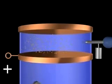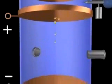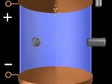He allowed a fine spray of oil to settle through a hole into a chamber where he could observe their fall. The top and bottom of the chamber consisted of electrically charged plates.